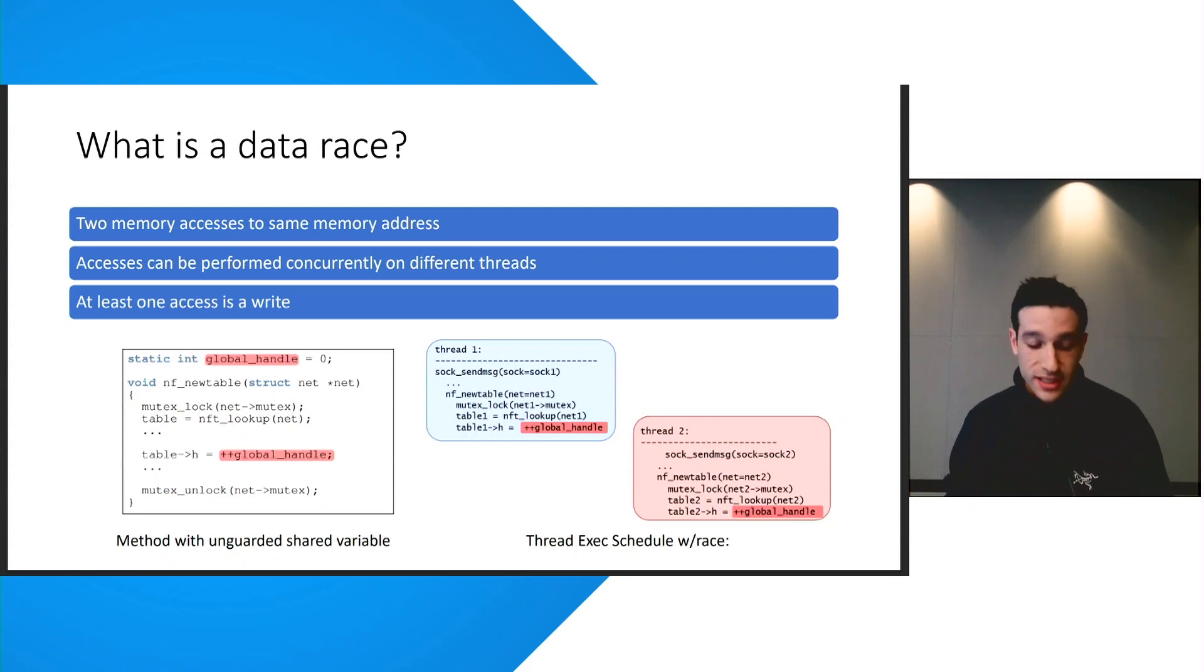We can see an example of how this can happen with a data race that we found in the NF new table method in the kernel where a global variable called global handle is not guarded by the dynamic mutexes in the method when it executes on different net structs. This means that when two different threads execute the NF new table method concurrently, they can perform racing increments to the global handle variable that make the table handles inconsistent.